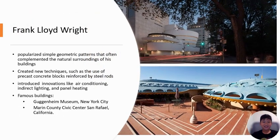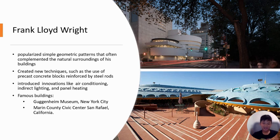Frank Lloyd Wright is popular for his simple geometric patterns that often complemented the natural surroundings of his buildings. He created new techniques such as the use of precast concrete reinforced by steel rods, and he introduced innovations like air conditioning, indirect lighting, and panel heating.